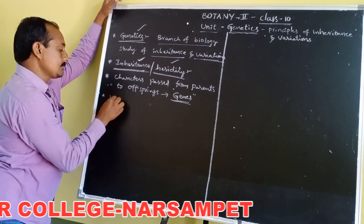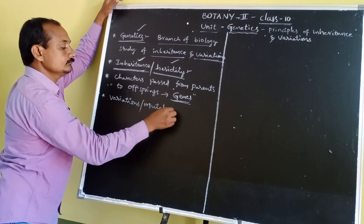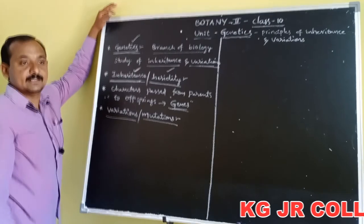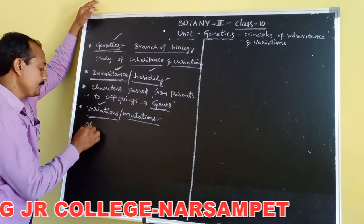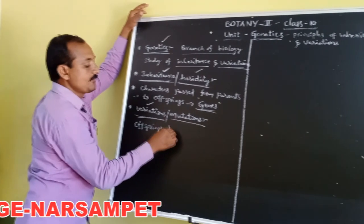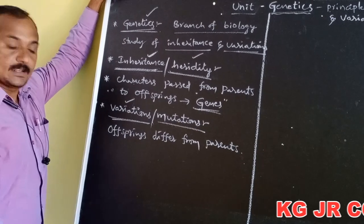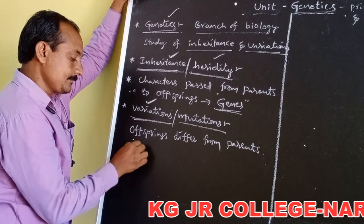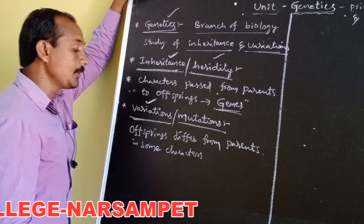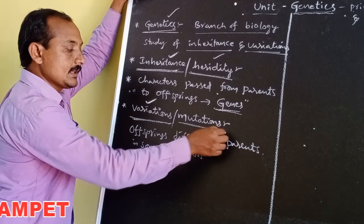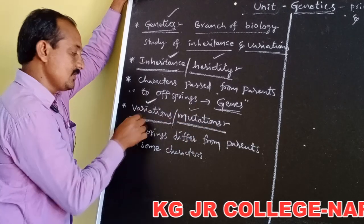Next, variations. Offspring differ from parents in some characters — these are called variations. Mutations are the sudden changes that occur in an organism and lead to changes in the physical appearance. These are called mutations and also variations.